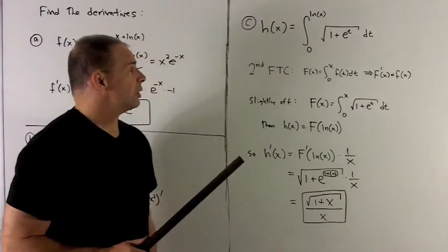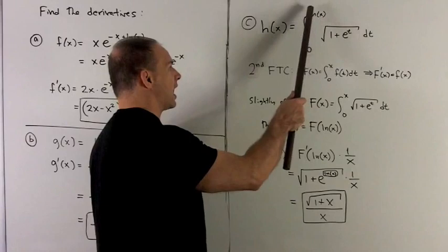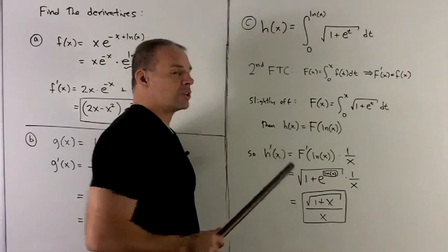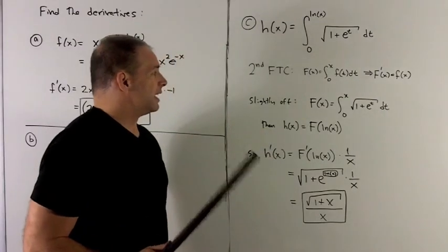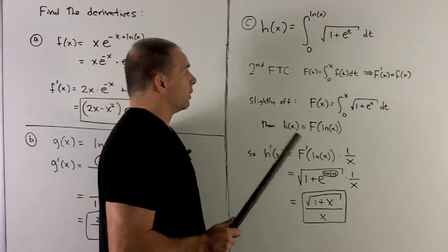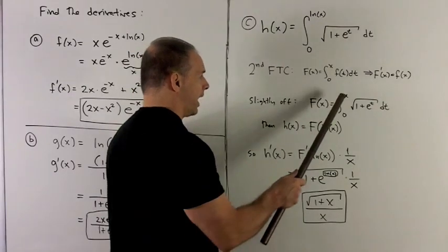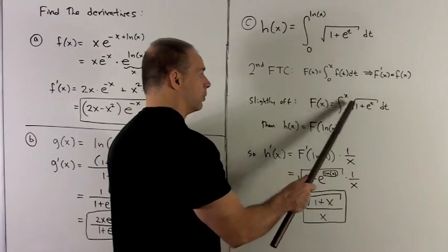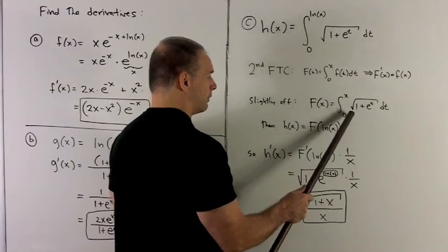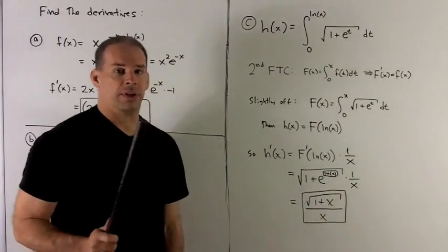So notice what I want to take the derivative of is slightly off. We have this natural log stuck up in here. So we want to know how do we deal with that. Well, the idea is we don't deal with it right away. What I do instead is put what we would like to have. I want to have big F of x equal to 0 to x with an x up on top of radical 1 plus e to the t dt. Now if you notice,